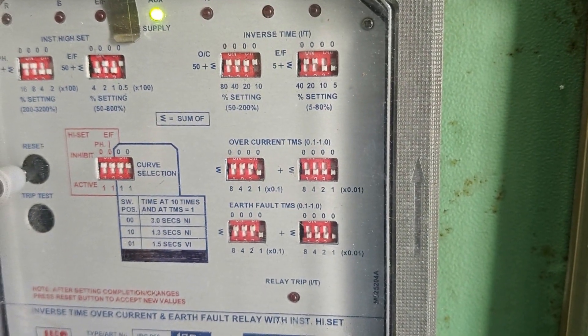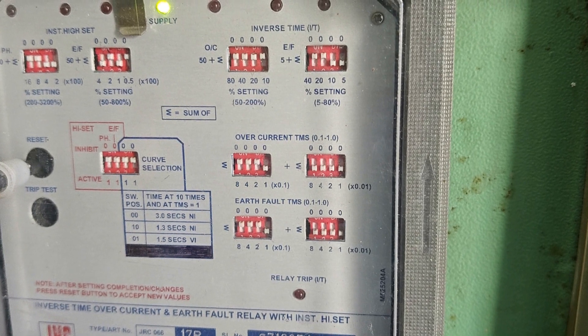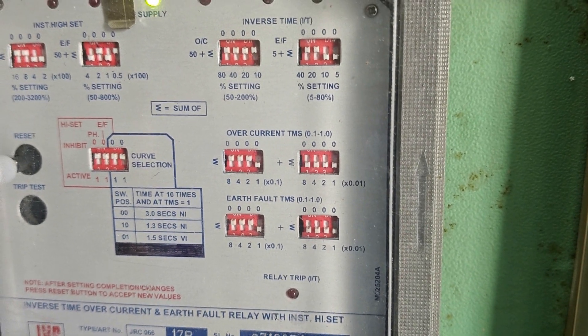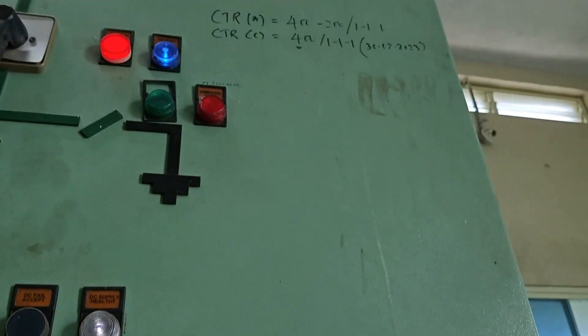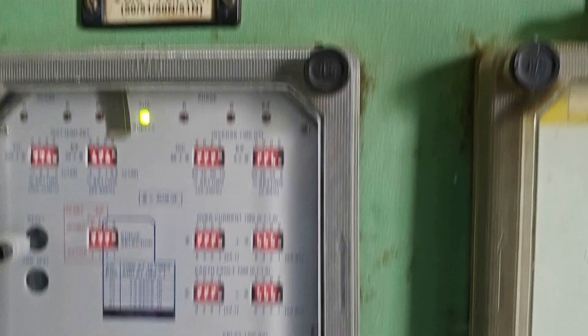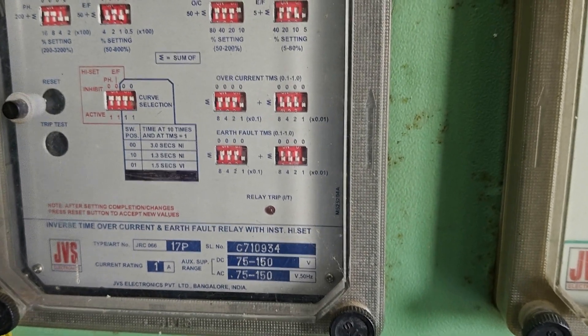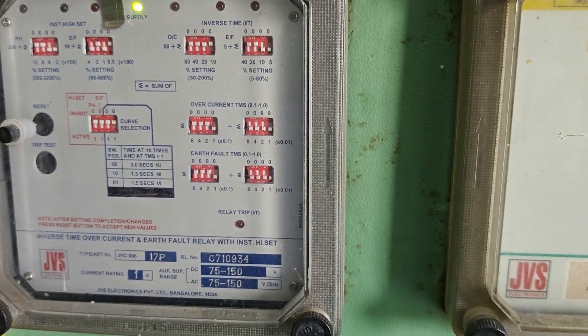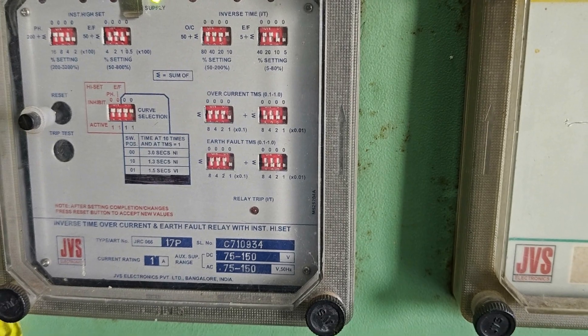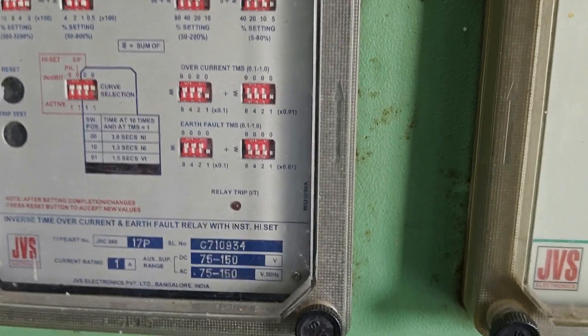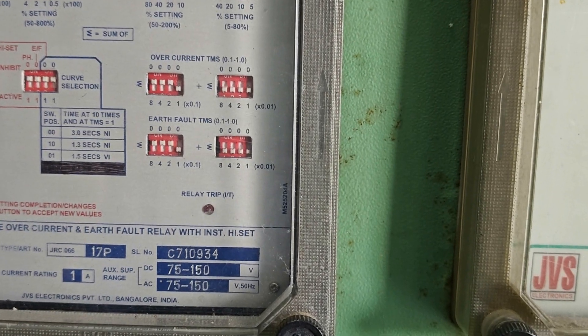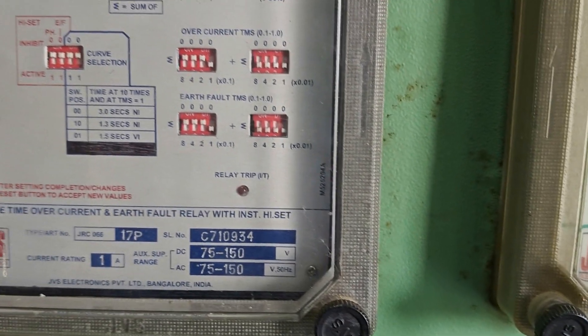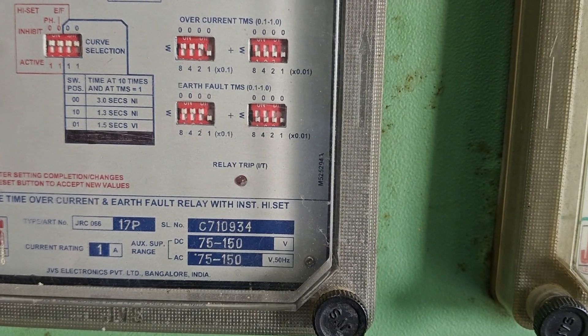For overcurrent, 50 plus Sigma — none of the buttons are down. The CT ratio connected, as you can see here, is 400, so we are using 200 percent settings. For earth fault, 5 plus 10 plus 5 gives us 15, plus 20 percent — so we are using 20 percent for the earth fault setting.